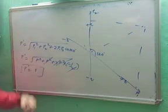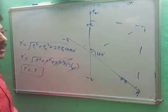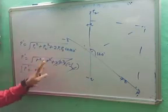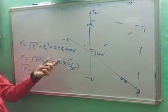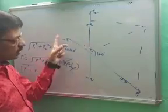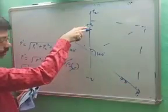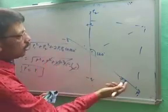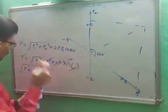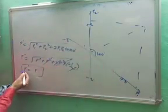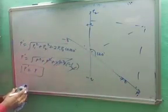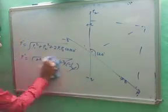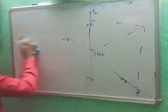This is another example related to electric dipole moment. By changing the orientation — initially plus Q, minus Q, plus Q, plus Q gives root 3 P, while plus Q, minus Q, minus Q, plus Q gives P dash equal to P. These are two numericals related to electric dipole moment.